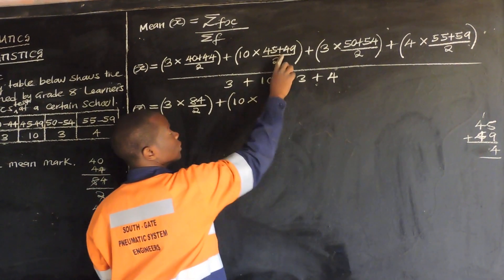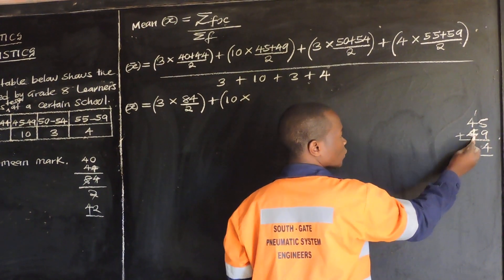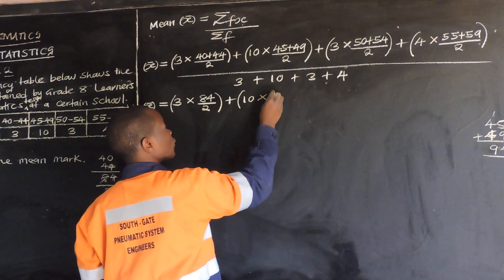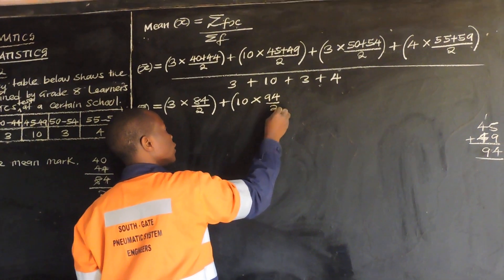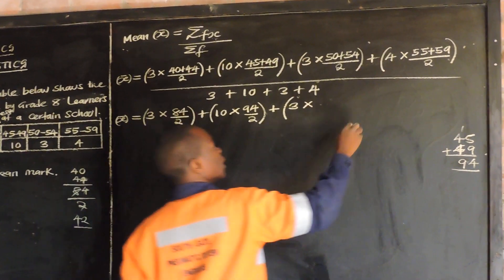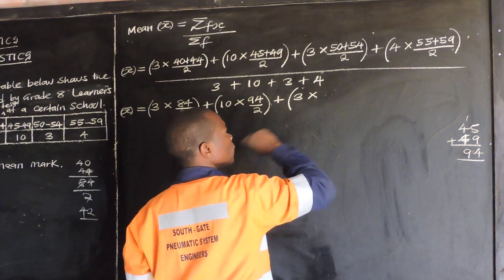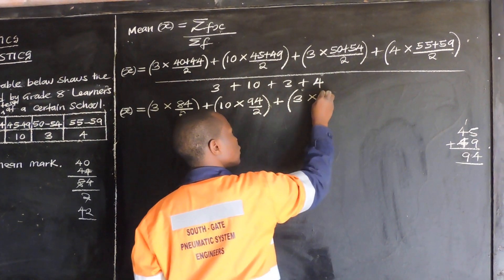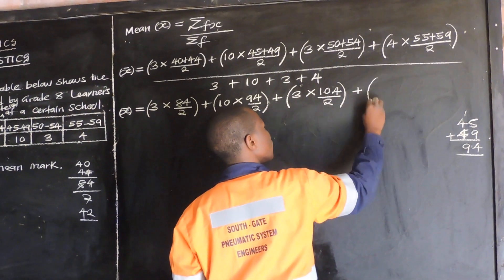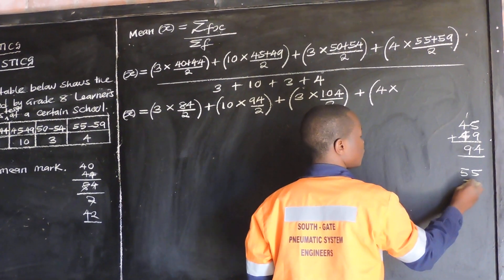So it's 45 plus 49. So 4 plus 4 gives 8, plus 1 gives 9, so it's 94 over 2. Then plus 3 times — what is 50 plus 54? You get 104, divided by 2. Then we have 4 multiplied by — what is 55 plus 59? So 9 plus 5 gives 14, carry 1, that gives 114. Then divided by 2. Are we together, people?